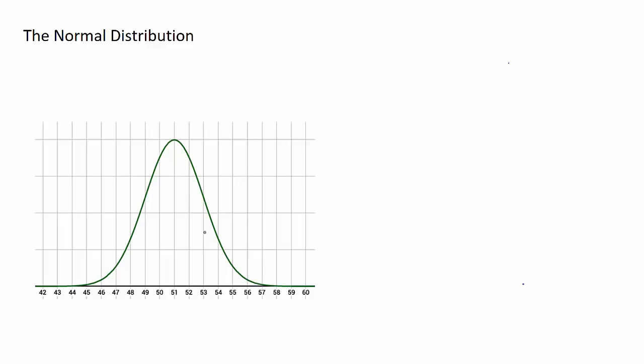The normal distribution curve illustrates a particular type of data spread. So in this case here we have numbers on the horizontal axis between about 42 and 60. This curve may be representing the marks of a particular class in a test out of 60.